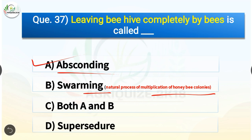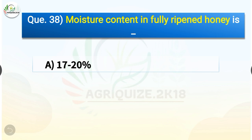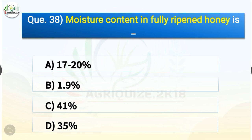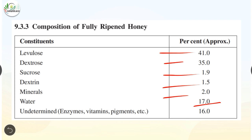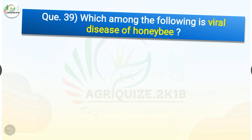Question number thirty-eight: moisture content in fully ripened honey is — options are 17 to 20%, 1.9%, 41%, or 35%. The correct answer is option A, 17 to 20%. The composition of fully ripened honey: levulose approximately 41%, dextrose 35%, sucrose 1.9%, dextrin 1.5%, minerals 2%, water 17%, and undetermined components including enzymes, vitamins, and pigments about 16%.